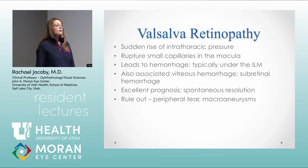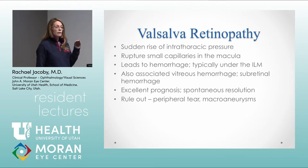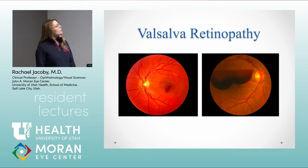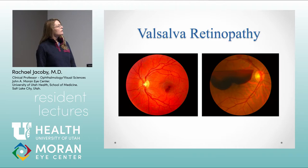Valsalva retinopathy can happen with any kind of strain — after food poisoning, after pneumonia with a lot of coughing. You get ruptures of these small blood vessels. They can be really mild or more severe — ruptures of small capillaries in the macula, and often the blood is under the ILM. Usually it just resolves on its own, but sometimes requires surgery. A mild valsalva retinopathy would just be watched; a more severe hemorrhage that isn't clearing would warrant surgical consideration.